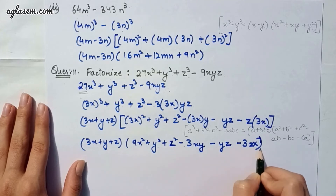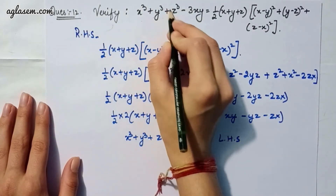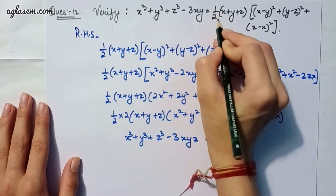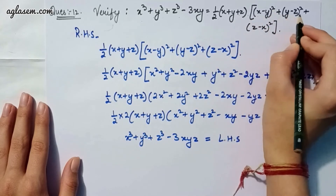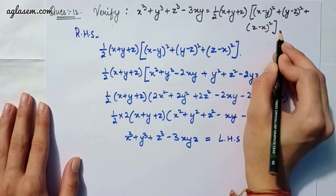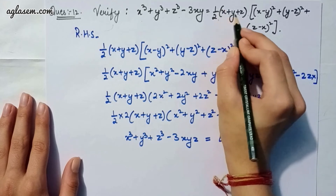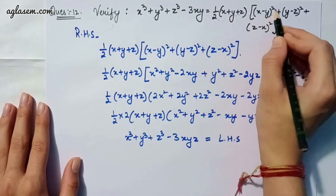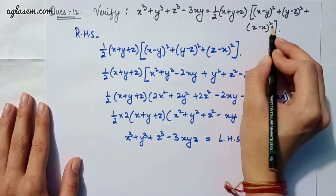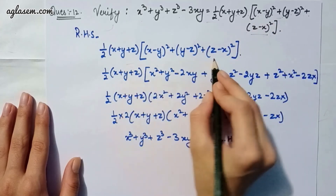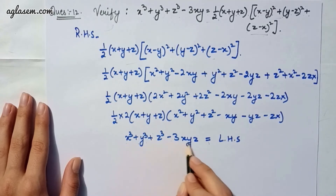Question 12: Verify that x³ + y³ + z³ - 3xyz = ½(x + y + z)[(x - y)² + (y - z)² + (z - x)²]. We take the right hand side: ½(x + y + z)[(x - y)² + (y - z)² + (z - x)²]. After solving, the answer is x³ + y³ + z³ - 3xyz, which equals the left hand side.